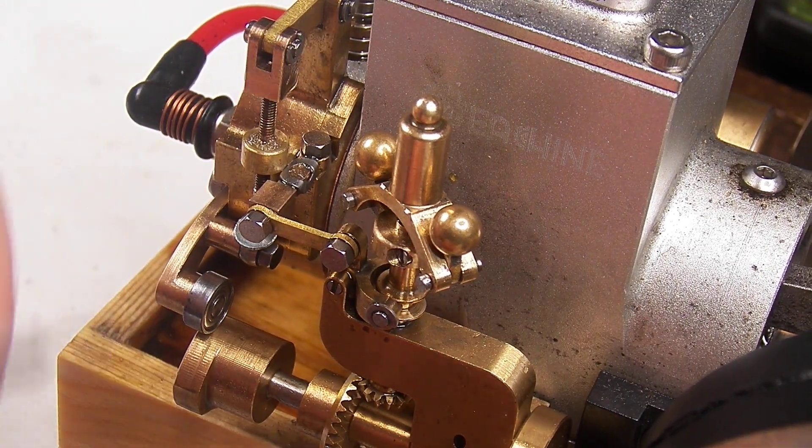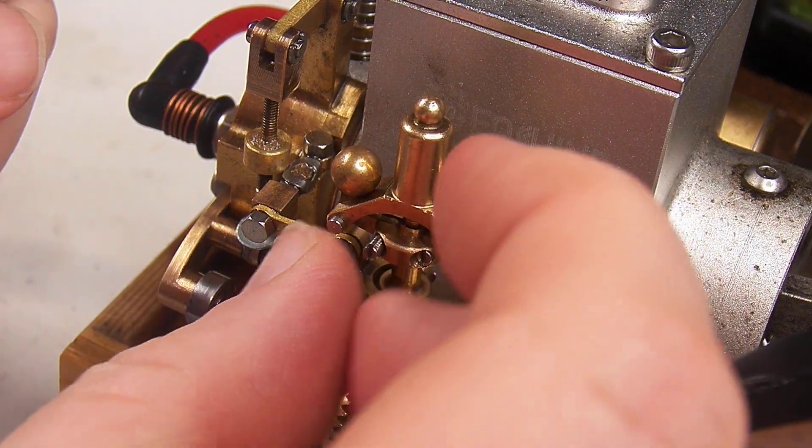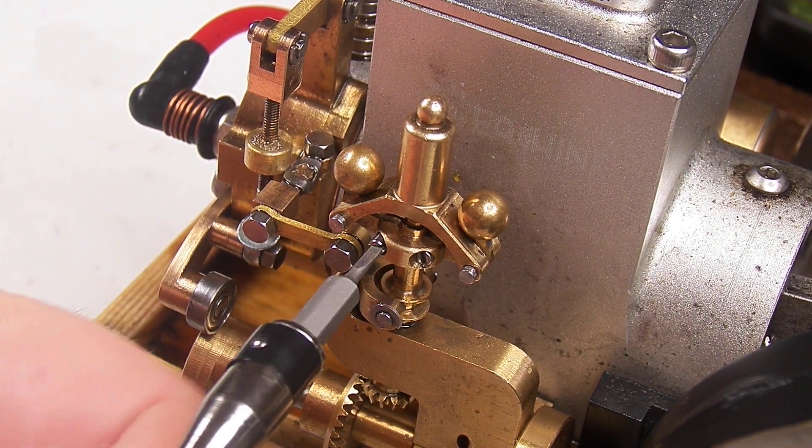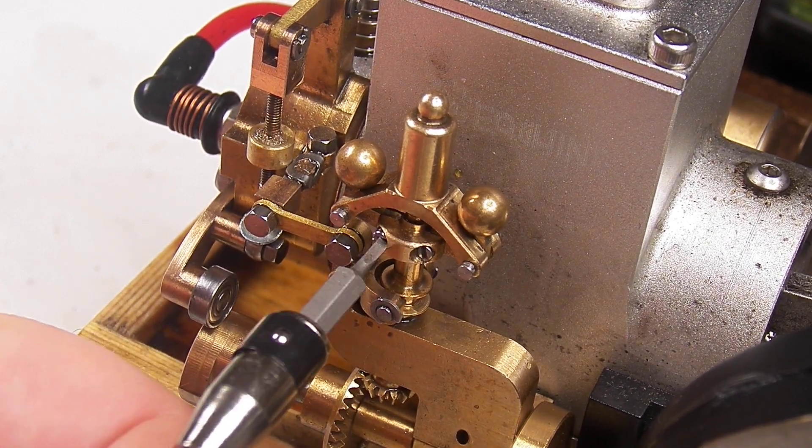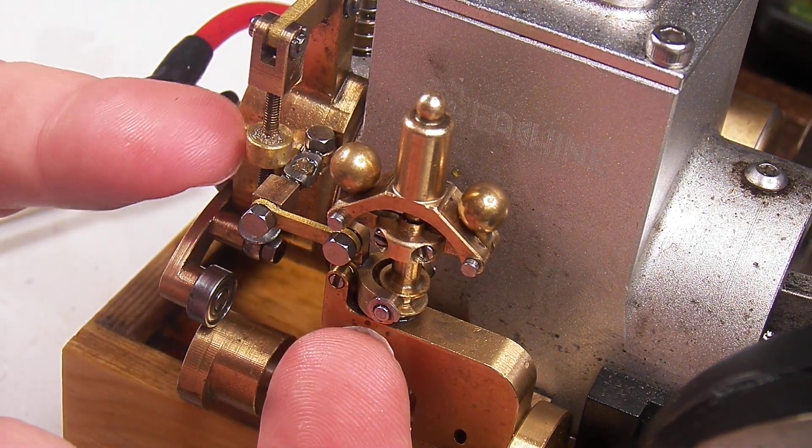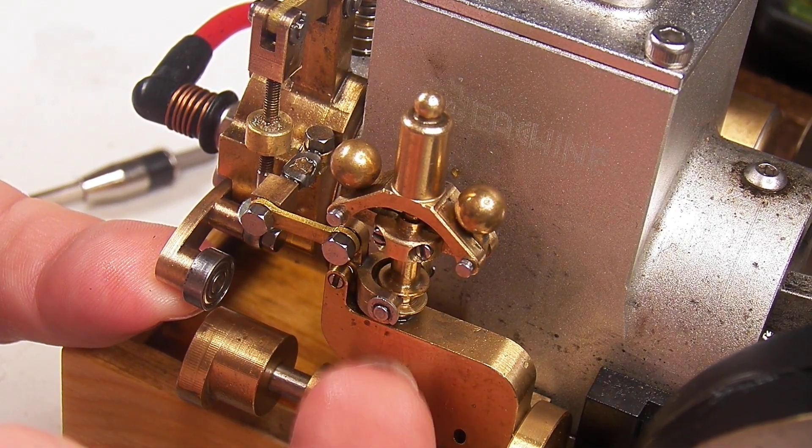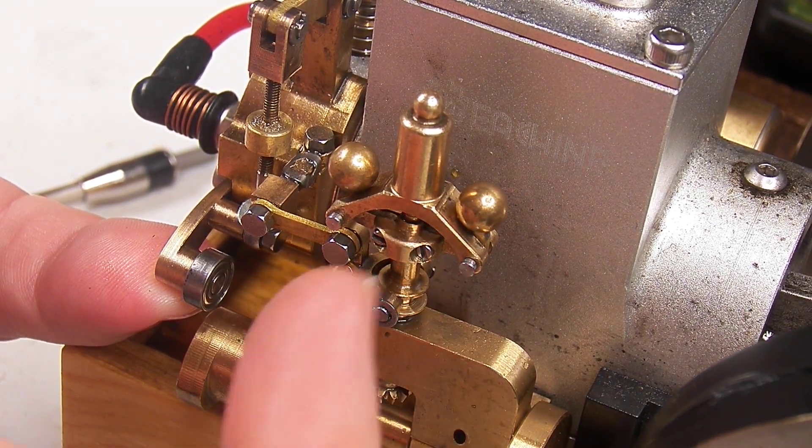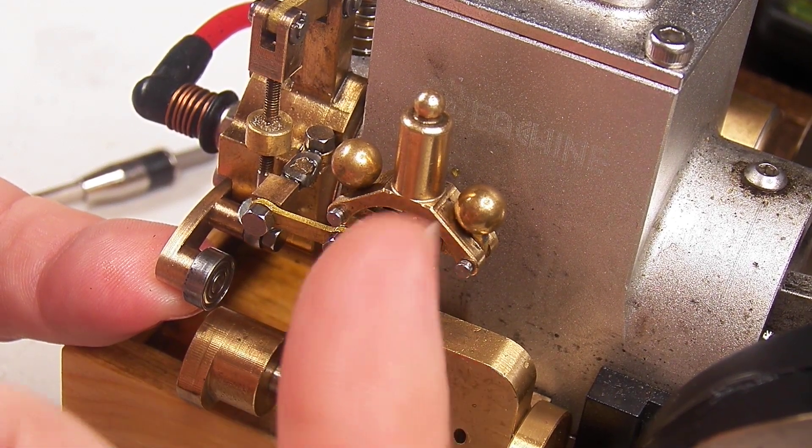Put that pin in and tighten that. The first time I did this I thought I needed to disassemble a whole lot more of the governor. Hold the exhaust open and just tap that and make sure that it's moving freely, which it's doing, so this is the right way around. If I reverse this and tap it, it won't close back up again.